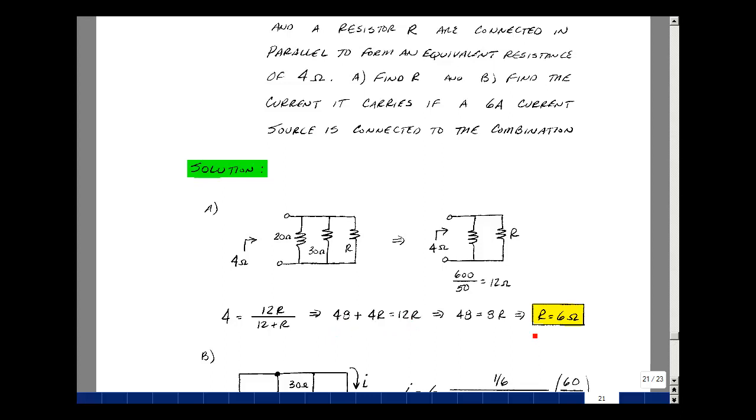Also in the class notes we had a shortcut formula that said if you had resistors in parallel and you knew what the value needed to be equal to that the value of the unknown resistance would equal the product over the difference. So 12 times 4 over 12 minus 4 would be equal to 48 divided by 8 or 6. By the way you get the same answer.